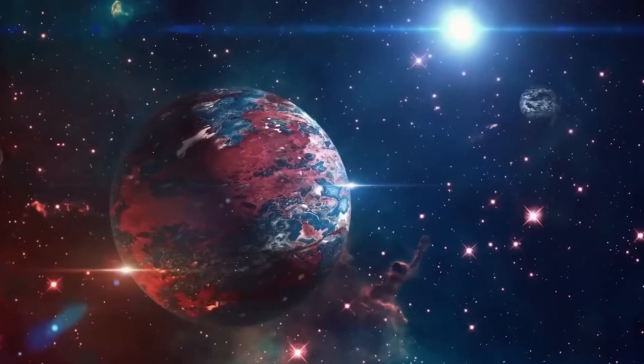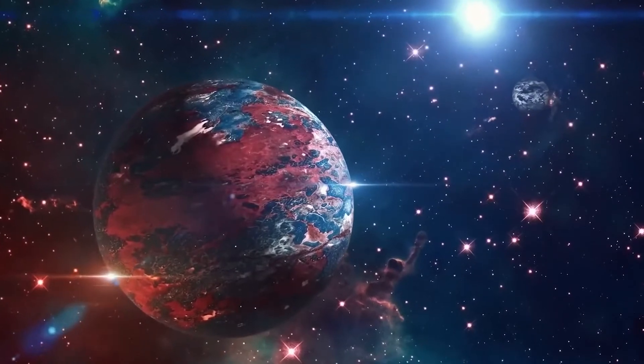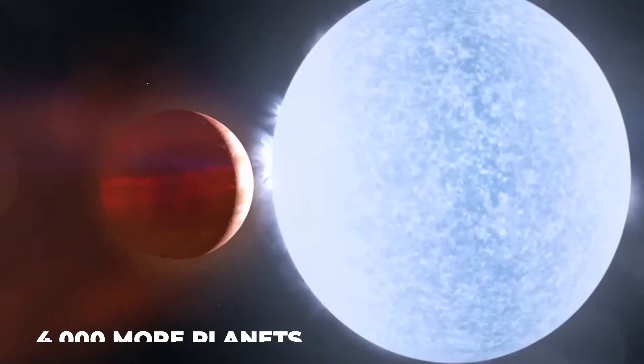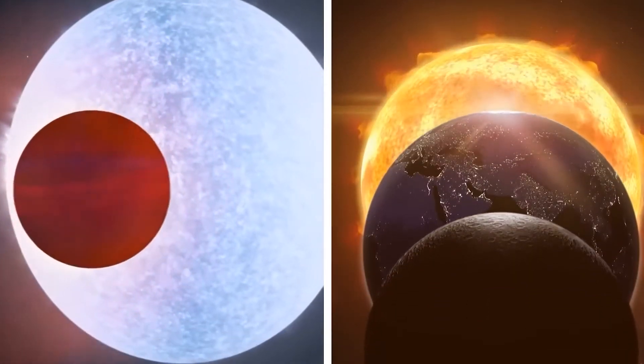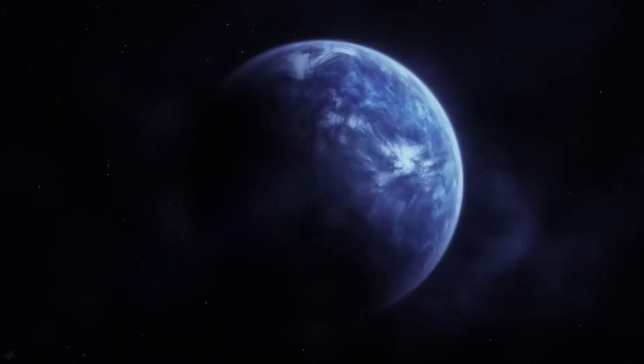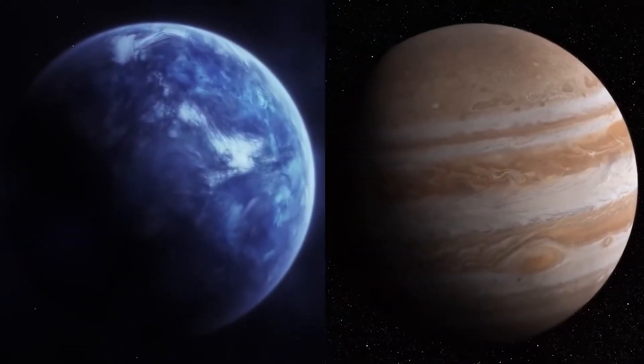Twenty years ago, there were no known planets outside those of our solar system, but since then more than 4,000 more planets, also referred to as exoplanets, have been discovered orbiting other stars. According to NASA, the cosmos may contain trillions of exoplanets.